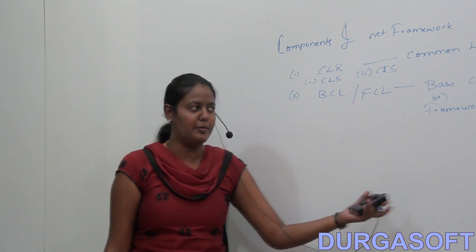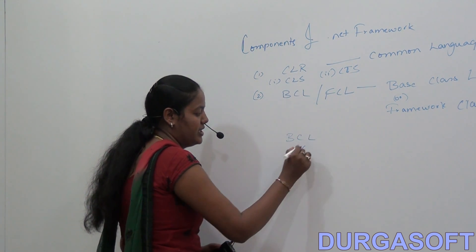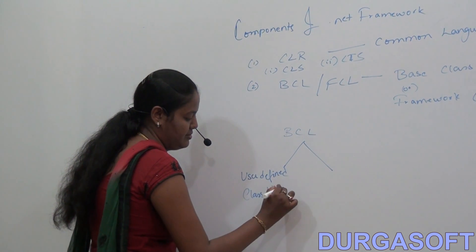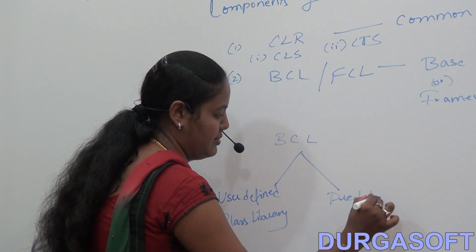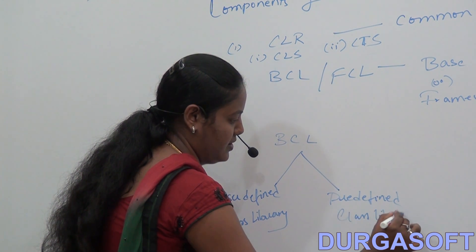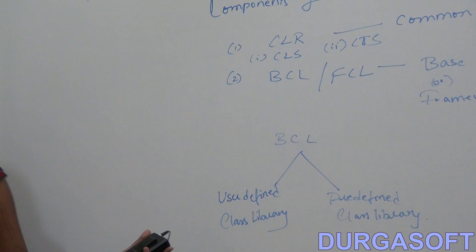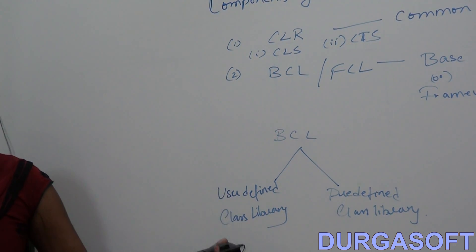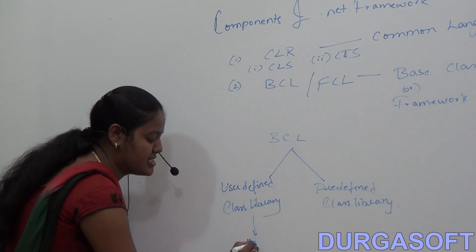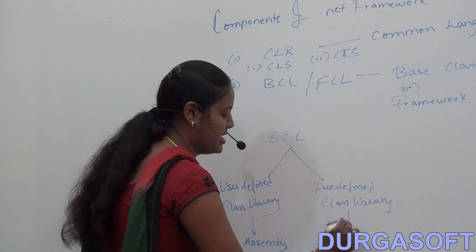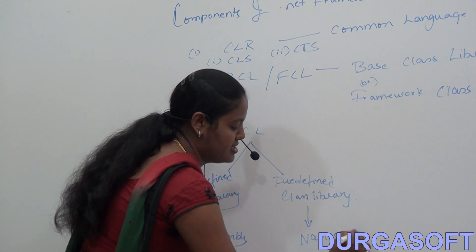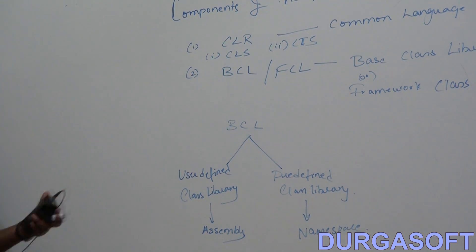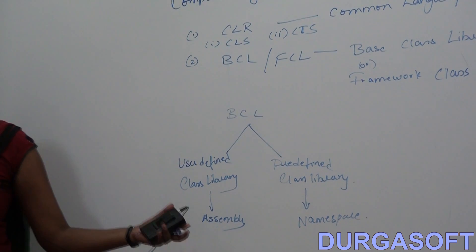The Base Class Library is divided into two types: user-defined class library and predefined class library. In earlier languages like C and C++ we called these header files; in Java they are packages. In .NET, the user-defined class library is called an assembly, and the predefined class library is called a namespace.